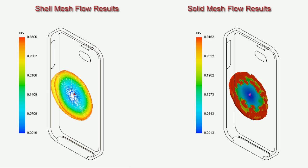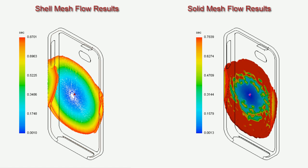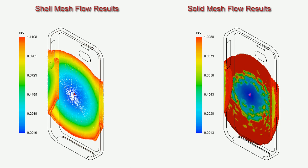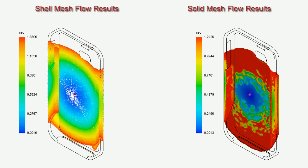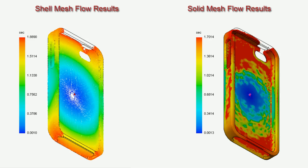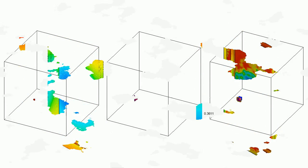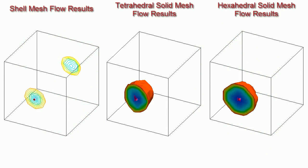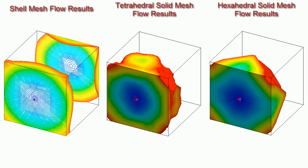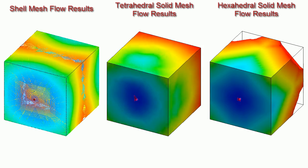Here you can see the analysis results on the shell and solid mesh. As you can see, there is not much difference because the part is very thin. However, when the part is very thick, you can see that the shell mesh is not very accurate.